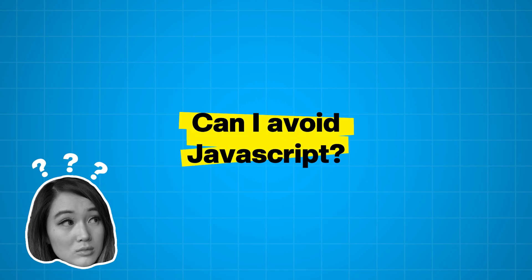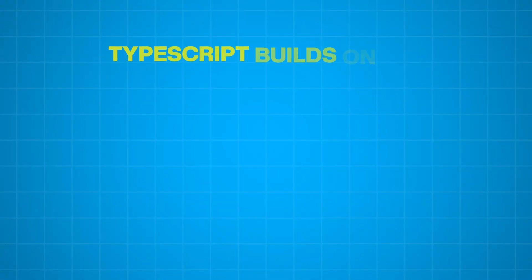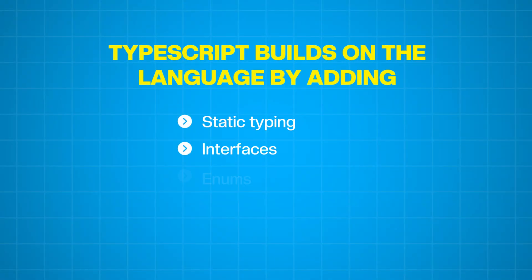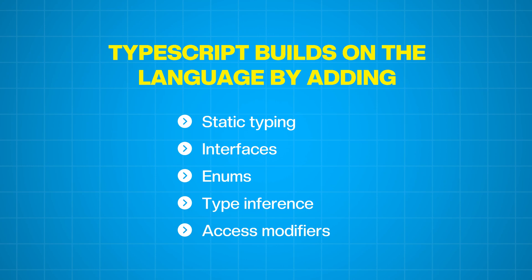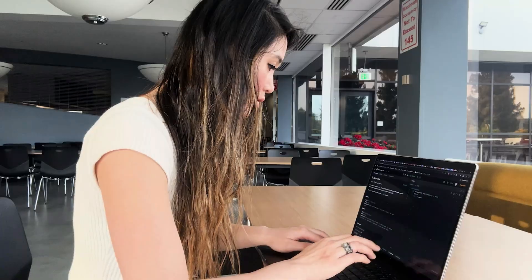You can't exactly avoid JavaScript since it powers the web, but you can often use TypeScript instead. TypeScript was introduced to solve some of the long-standing challenges developers face with JavaScript, particularly in larger complex projects. As a superset of JavaScript, TypeScript adds static typing, interfaces, enums, and other powerful features that make code more predictable and self-documenting. These enhancements help developers catch bugs early in the development process, improve code quality, and collaborate more effectively, especially in teams.